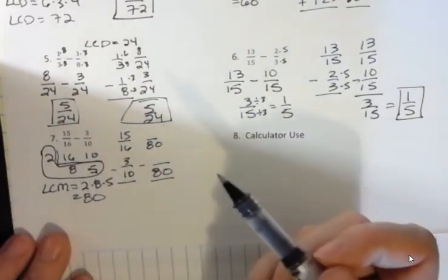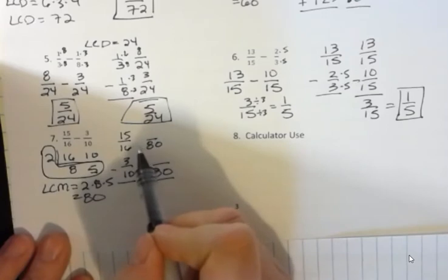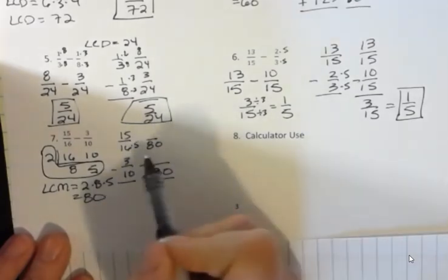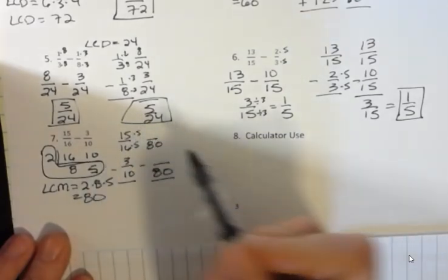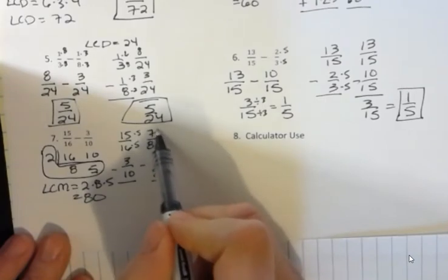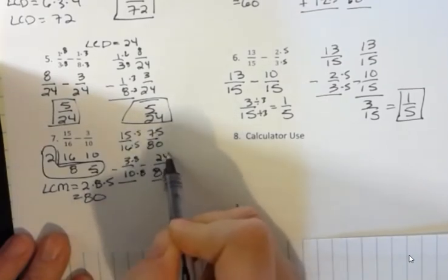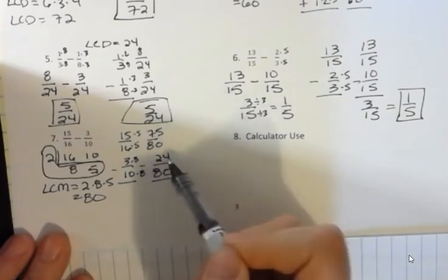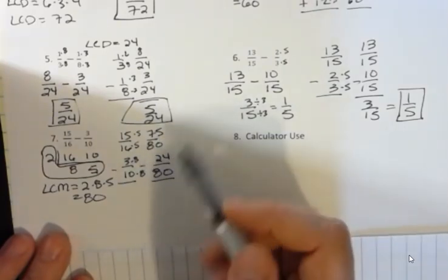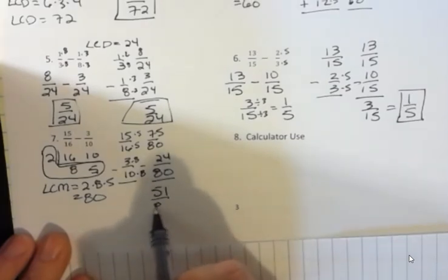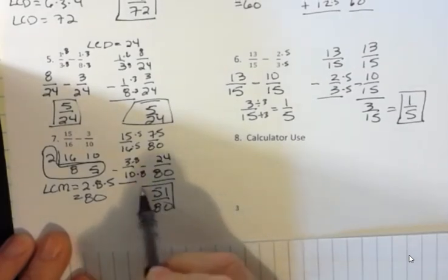That's a nice little bonus. But you can just take 80 and divide by 16, and you'll see that you have to multiply by 5. And so you have to multiply the top by 5 as well, which is 75. On the bottom, I'm going to multiply by 8, and that's going to give me 24. So I have 75 minus 24, which is 51 over 80. And that would be my answer.